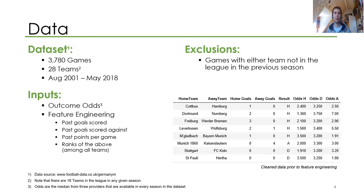The data I used for this project includes 3,780 games, including 28 different teams, over the course from 2001 till May 2018. I retrieved the data from football-data.co.uk. They have lots of Excel sheets covering different leagues, and all these Excel sheets include lots of data on the games played during a season. A little problem is that they have Excel sheets for each individual season, and the information in each Excel sheet changes, so I had to do some cleaning up.